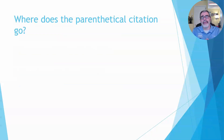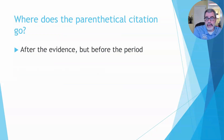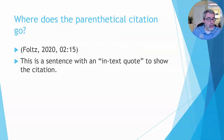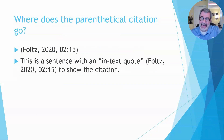Where does this citation go? We're treating it like any other APA citation, so the answer is after the evidence. The citation always goes after the evidence but before the period of the sentence, regardless of where in the sentence the citation is located. Here's our citation: Fultz 2020 and the timestamp at the 2 minute and 15 second mark, placed right after the in-text quote. Notice that it is not inside the quotation marks — that's important. It goes outside the quotation marks.